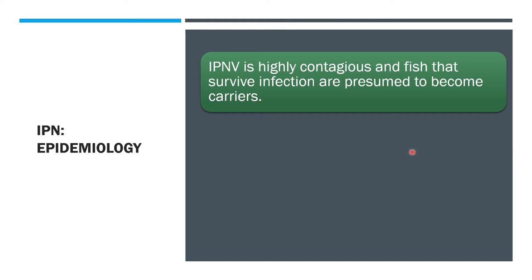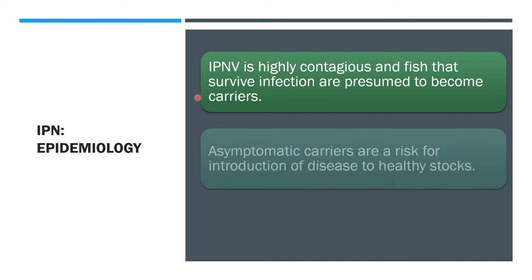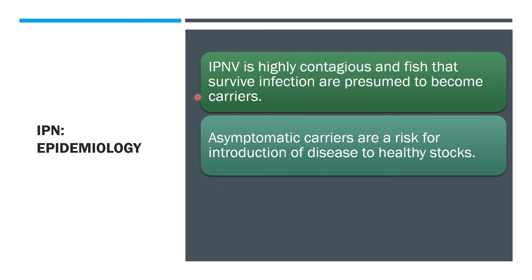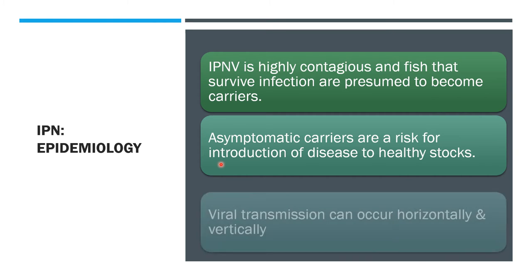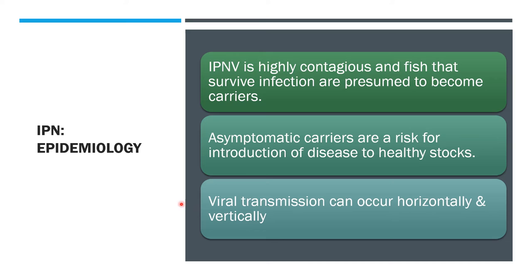For the epidemiology, IPNV is highly contagious, and fish that survive the infection are presumed to become carriers. Asymptomatic carriers are at risk for introducing disease to healthy stocks. Viral transmission can occur both horizontally and vertically.